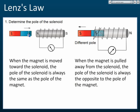How does it oppose? It will produce a north pole here to oppose the motion, because north pole and north pole repel each other. So it produces a north pole here to repel the motion of the incoming magnet.